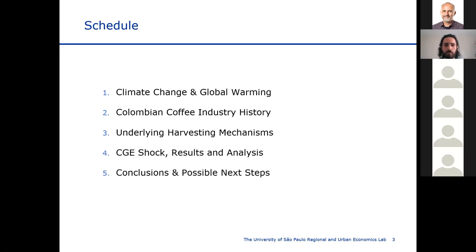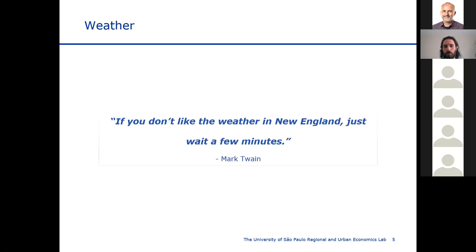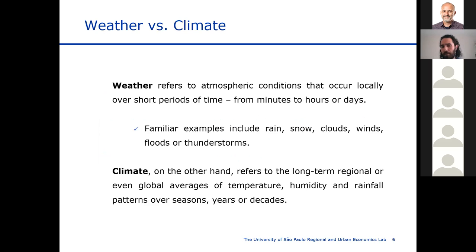I'll begin by discussing the distinction between climate change and global warming, since there is a common misconception that people use these terms interchangeably when they are not. Weather refers to atmospheric conditions occurring locally over short periods of time — rain, snow, cloudiness, wind, and so forth. Climate, on the other hand, refers to long-term regional or global averages of such atmospheric conditions. Climate change is a physical phenomenon of globally long-lasting shifts in temperature, precipitation, and cloudiness.